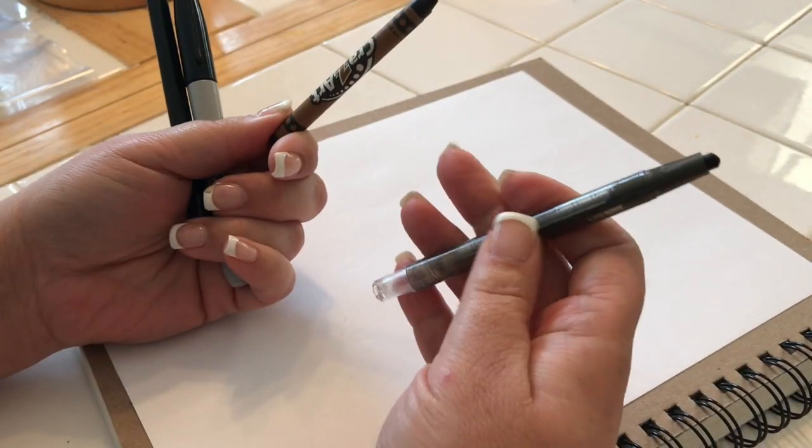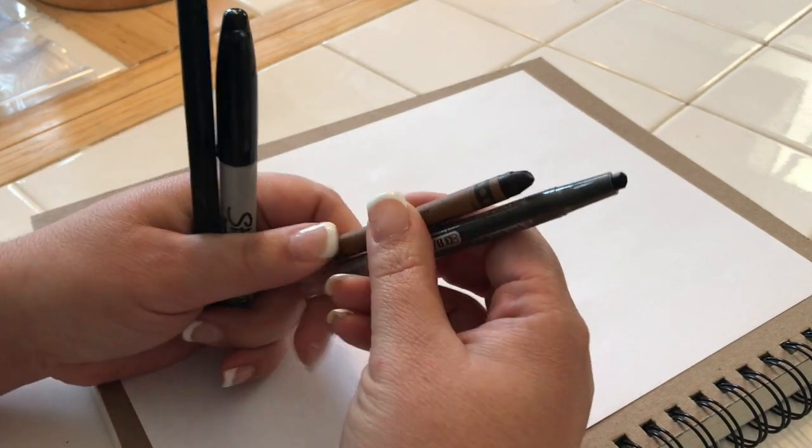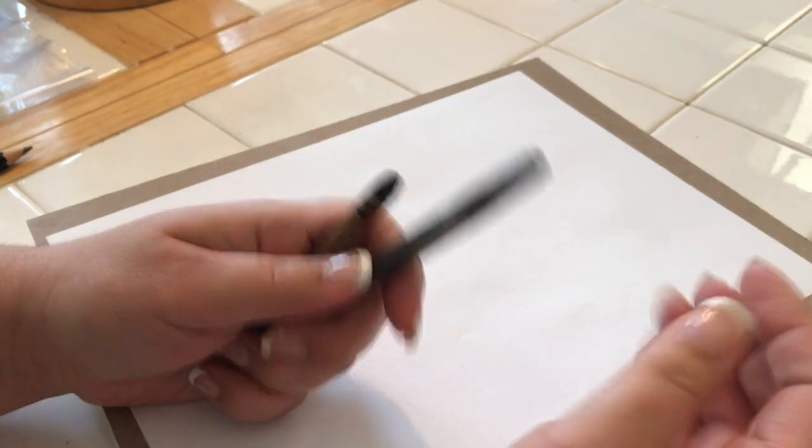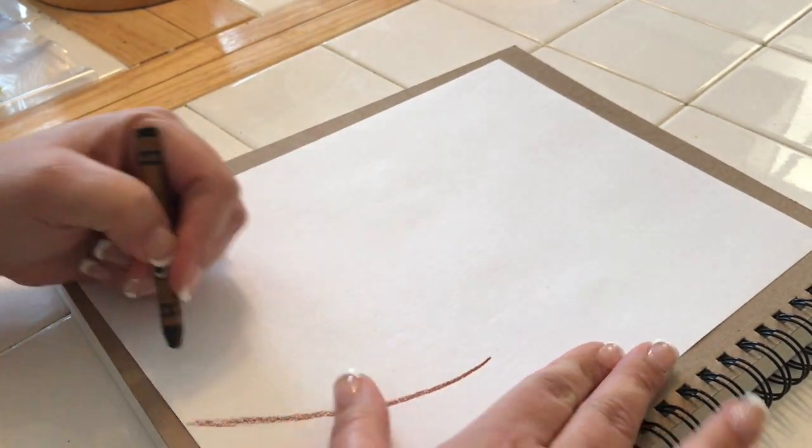I have brown and black crayon, or you can use, as I've shown, a Sharpie or a pencil. But we're going to use the brown crayon and the black one, which can be found anywhere at home.